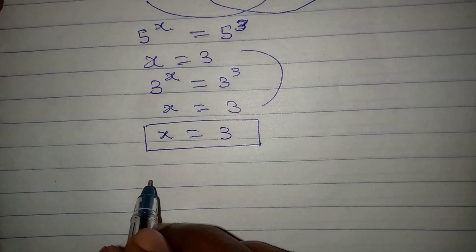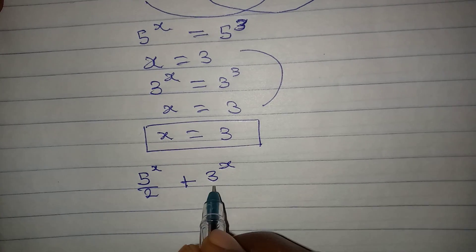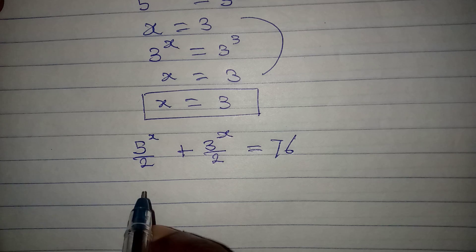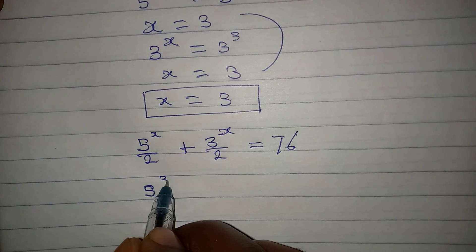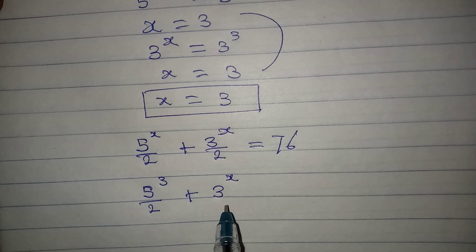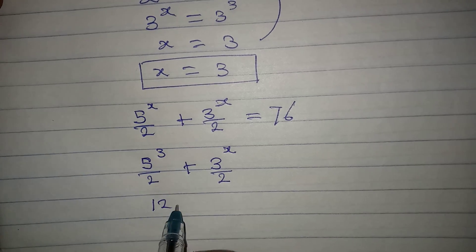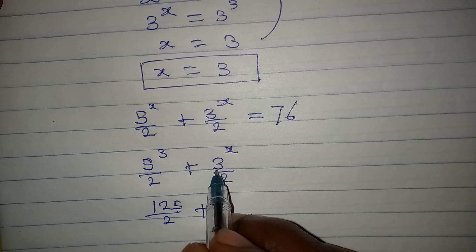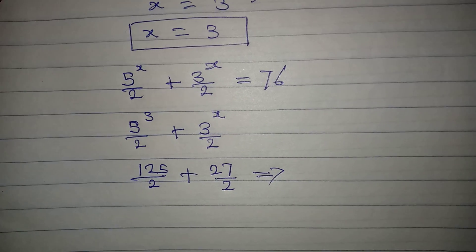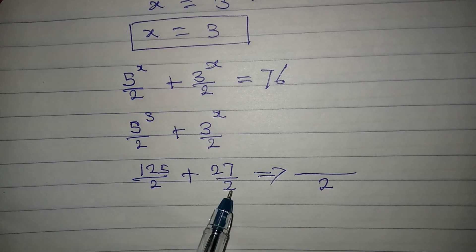Now let's put this back into the original equation to verify. The original equation is 5 to the power of x over 2 plus 3 to the power of x over 2 equal to 76. Substituting x = 3 gives us 5 to the power of 3 over 2 plus 3 to the power of 3 over 2, which is 125 over 2 plus 27 over 2. Finding the LCM, the denominators are the same, so we add the numerators.